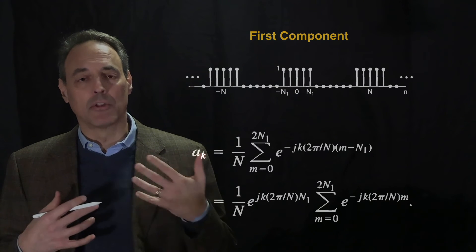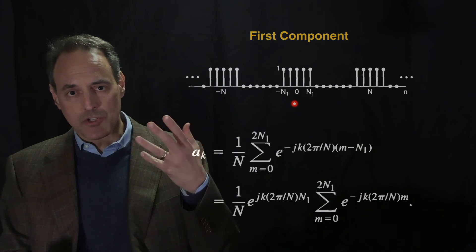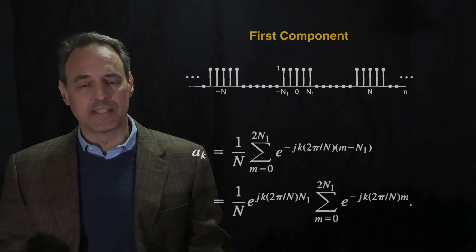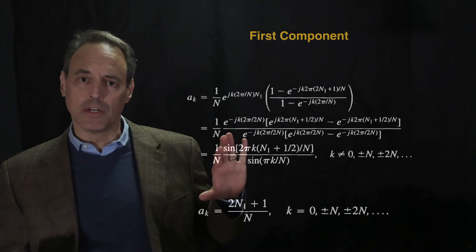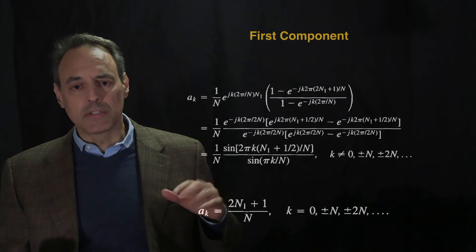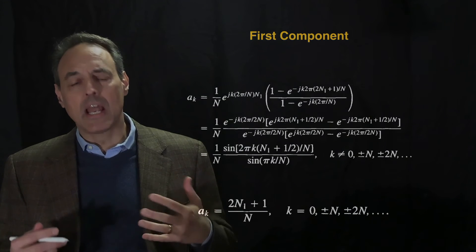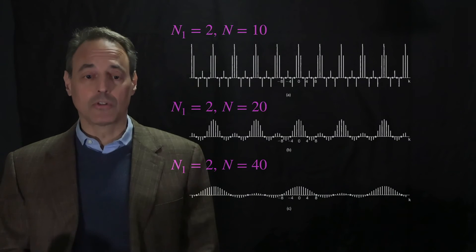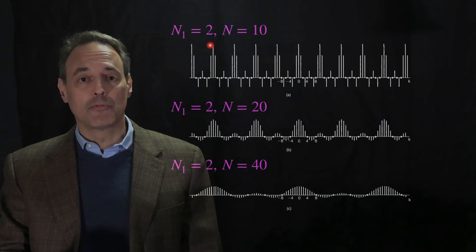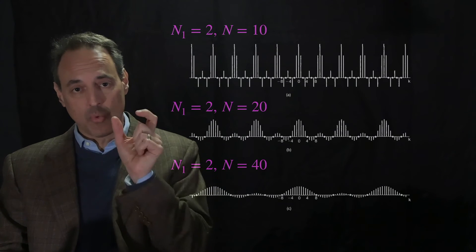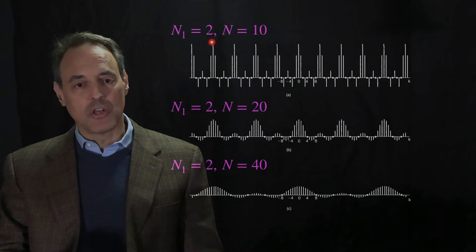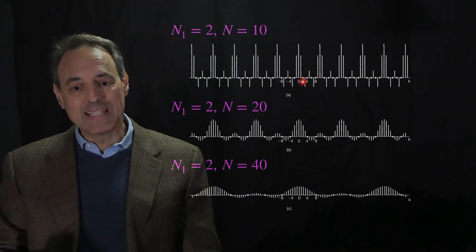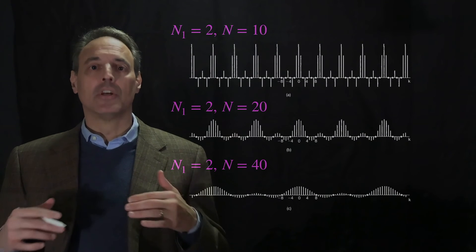Oftentimes signals coming through a system are represented by an on-switch that comes on and goes off. This computation gives us the x(n) representation in Fourier modes. Now, this was generic for N1 and N, and we can apply it to specific examples. Let's show some pictures: taking N1 equals 2, the signal is on for 5 discrete units, and we can pick a fundamental period of 10, 20, or 40 to see what those a(k) values look like.